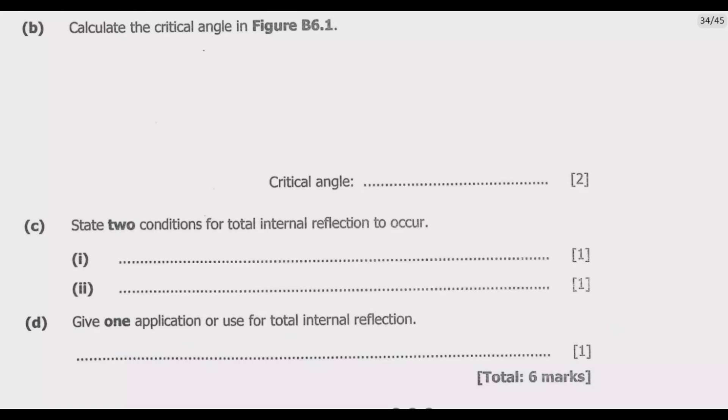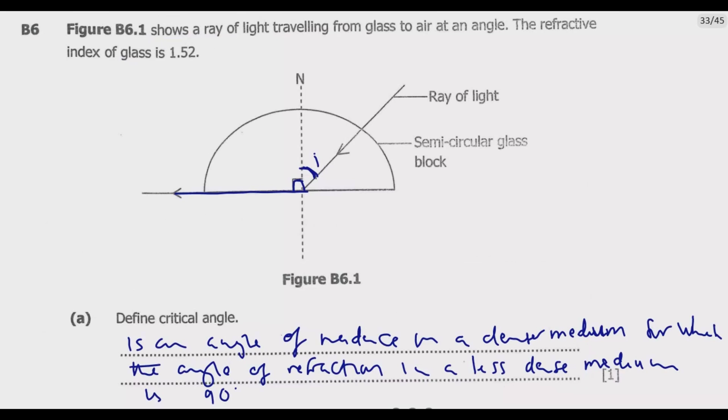Question B: Calculate the critical angle in Figure B6.1. Let us label some areas. Let the glass be medium one because that's where the light is coming from, then the air be medium two. This is the denser medium, then this side is the less dense medium.